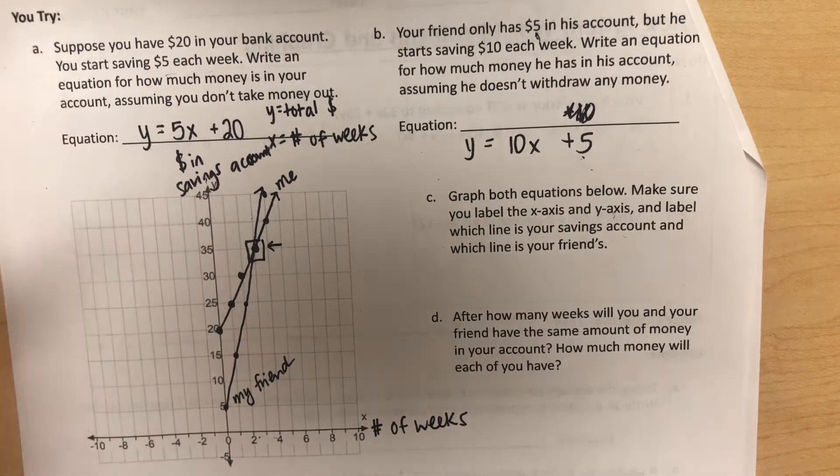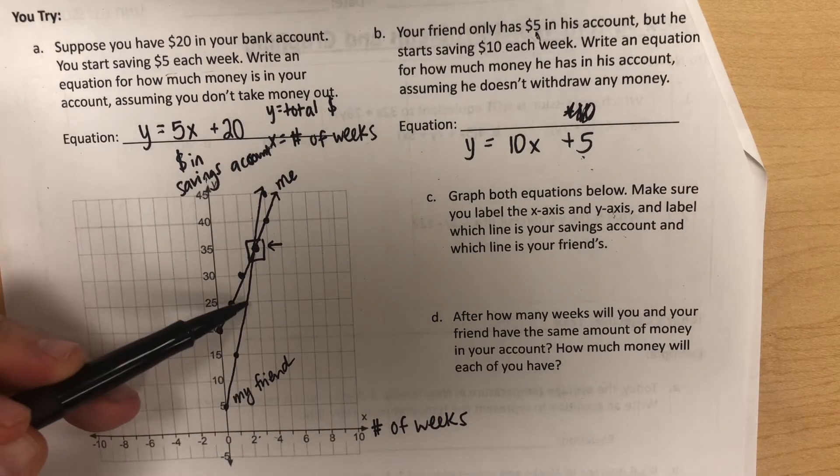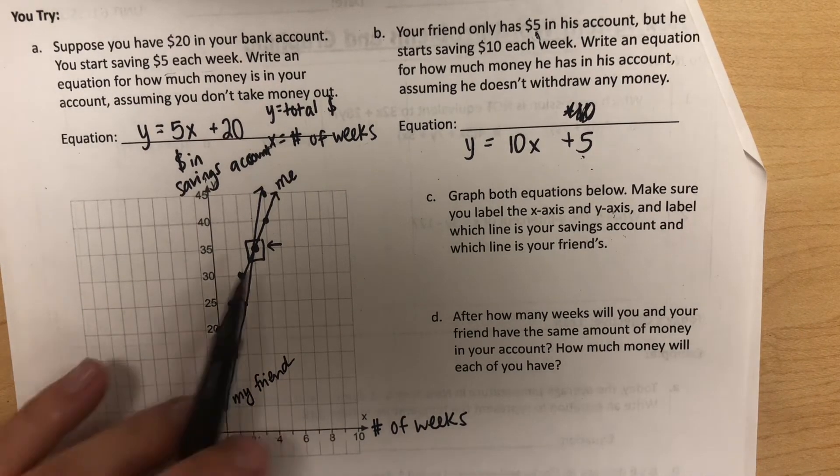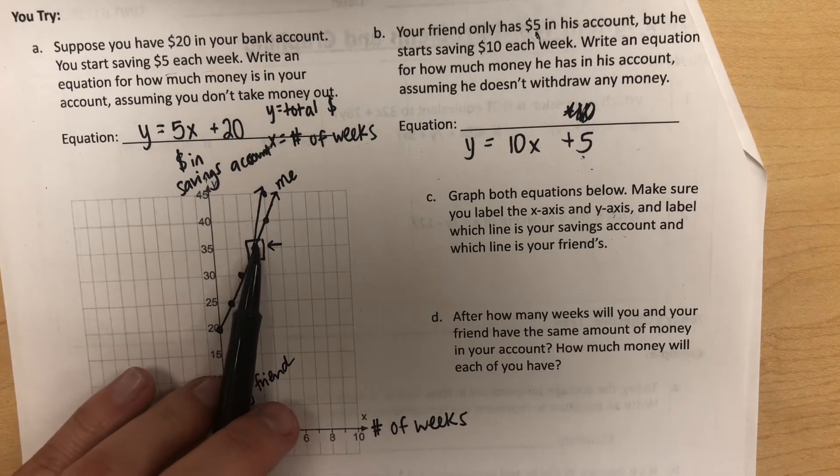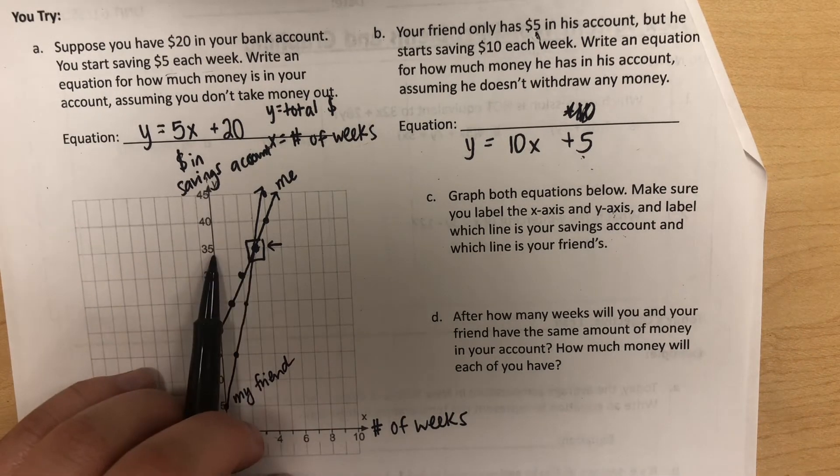If you were reading each of those points as you plotted them—after one week, $15; two weeks, $25—if you were reading them with words as you plotted those points, you would have heard both times when you marked this point down. You said three weeks, $35.